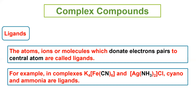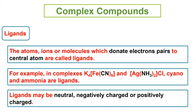Isi tarah Ag(NH3)2Cl mein NH3 ligand hai, isnei bhi electron pair donate kiya hai silver ko. Ligands may be neutral, negatively charged, or positively charged. Jaise ke cyanide (CN) negatively charged ligand hai, lekin NH3 neutral ligand hai. Isi tarah positively charged ligand bhi ho sakti hai.